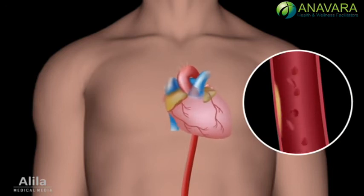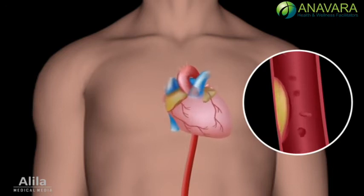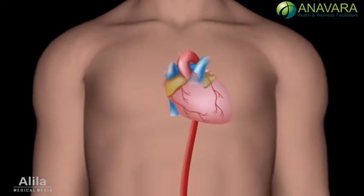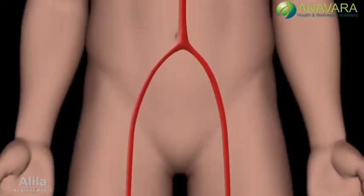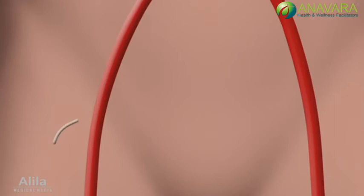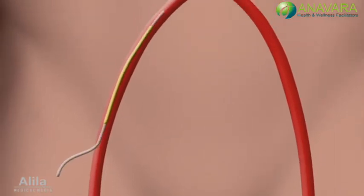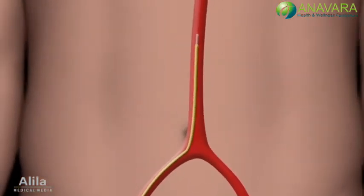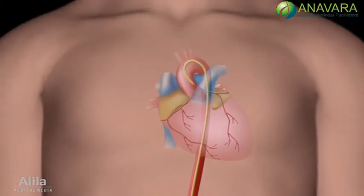The first part of the procedure is to localize the site of blockage. This part is called coronary angiogram. A guiding catheter is inserted through the femoral artery at the groin and threaded all the way to the aorta. The tip of the catheter is placed at the beginning of the coronary artery to be investigated.